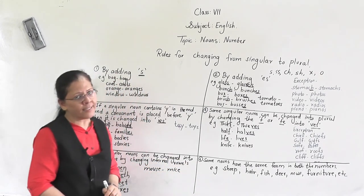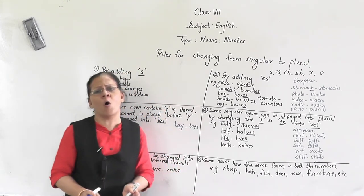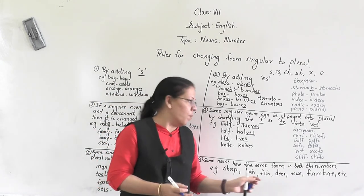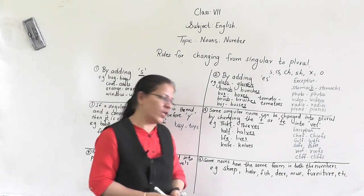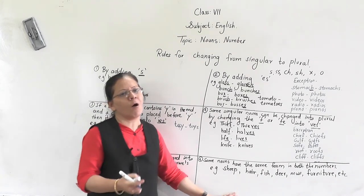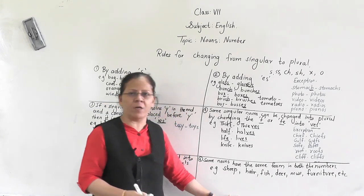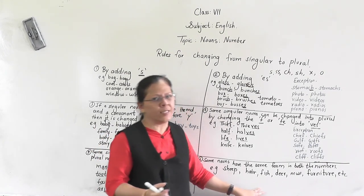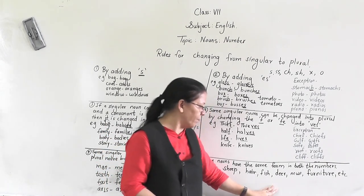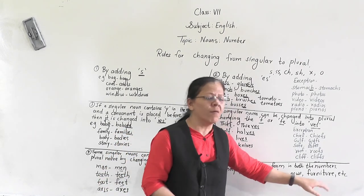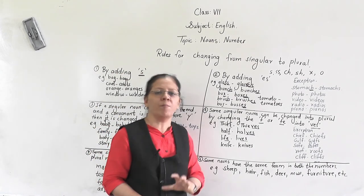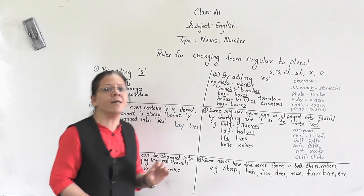Rule number six: some nouns have the same form in both numbers. Whether singular or plural, they remain the same — they do not change. For example, ship: whether it is one ship or many ship, it remains 'ship'. Hair remains the same in singular and plural. Fish, deer, news, and furniture also do not change. In both cases, singular and plural, they remain the same.